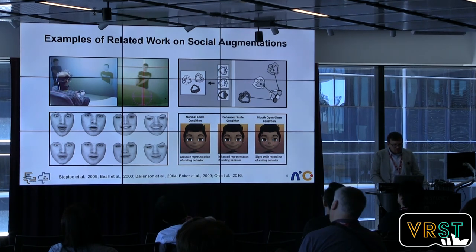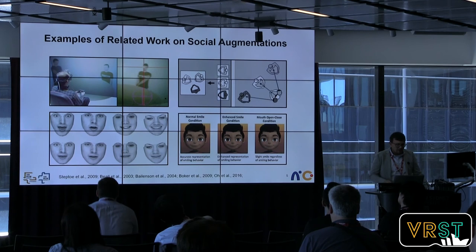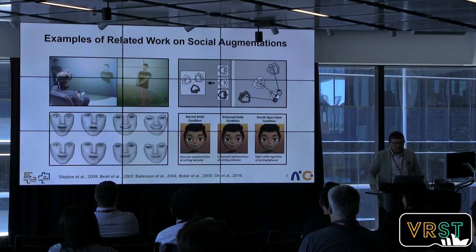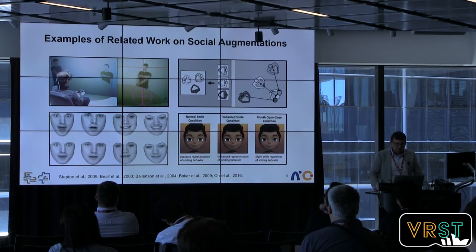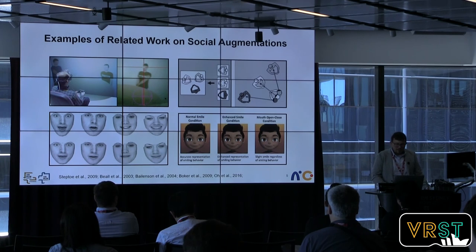Previous work on social augmentations includes Anthony's lab considering gaze as a communicative behavior in shared environments. Jeremy Bailenson reported on transformed social interaction — decoupling physical behavior from virtual representation — including a non-zero-sum gaze approach where a speaker could direct attention to multiple listeners simultaneously. Steven Booker considered the dampening of facial expressions and real-time manipulation, including smile behavior in avatar-mediated communication.